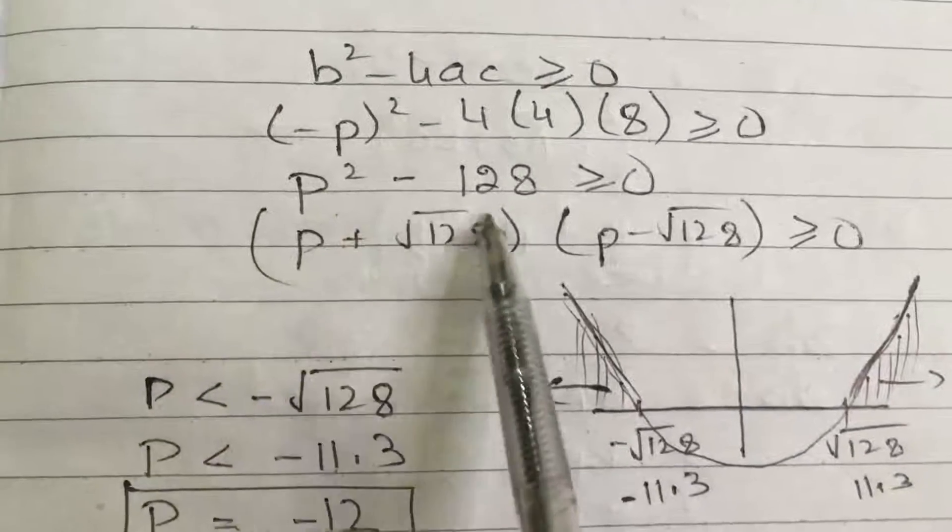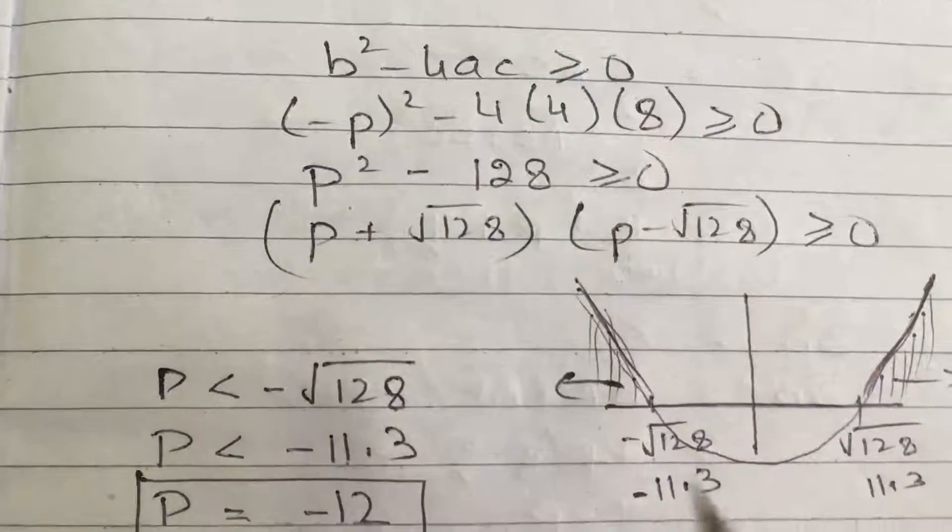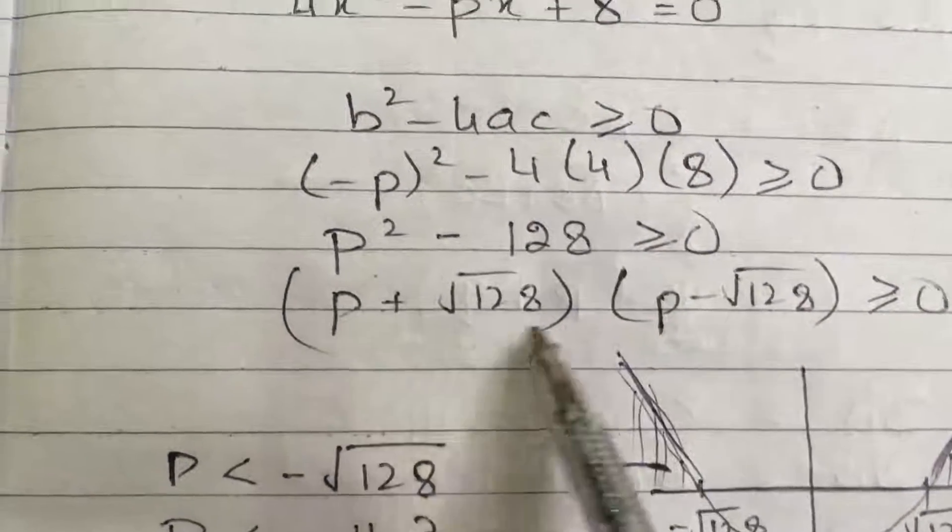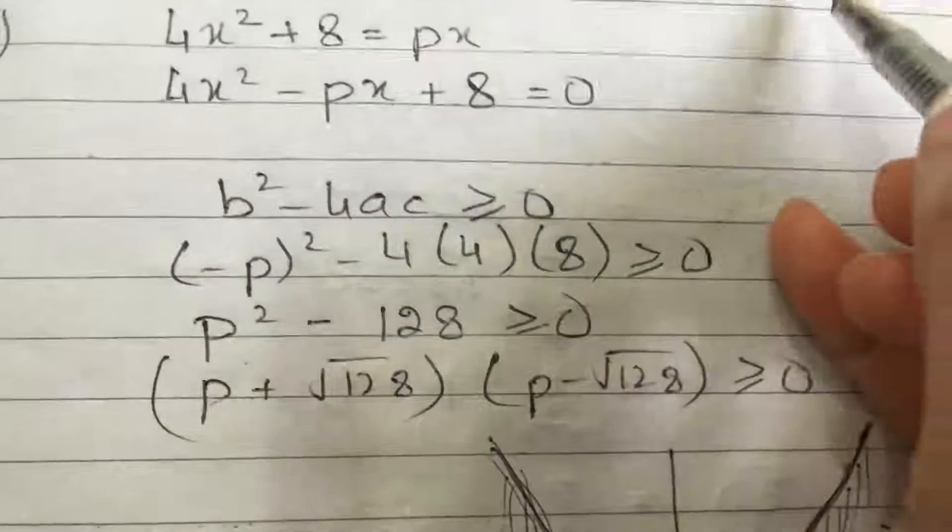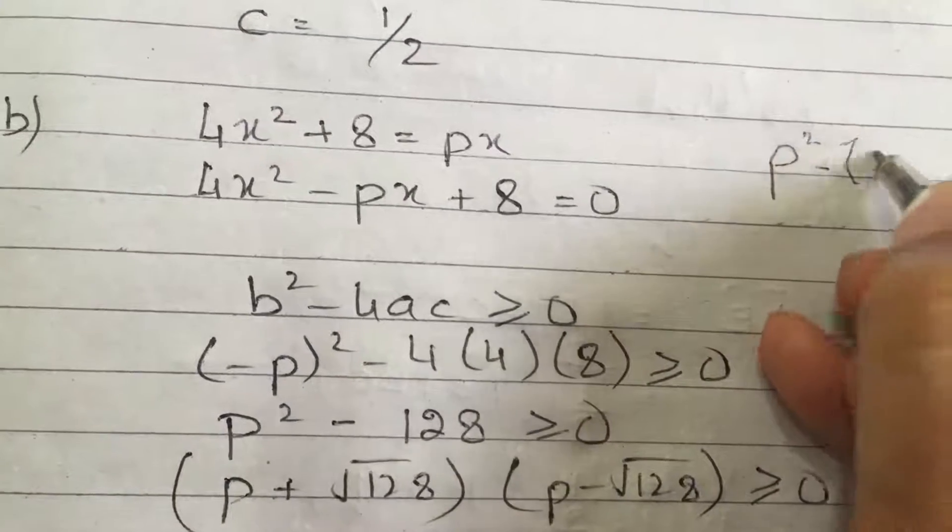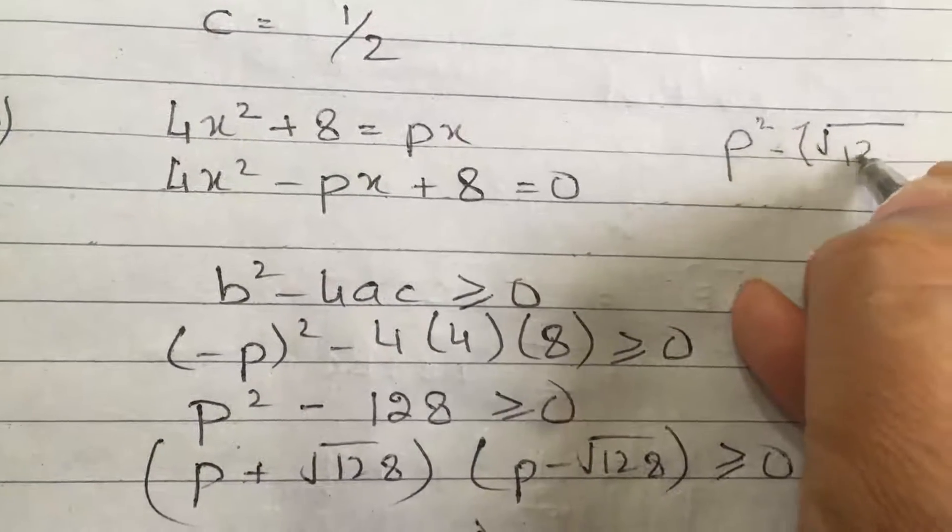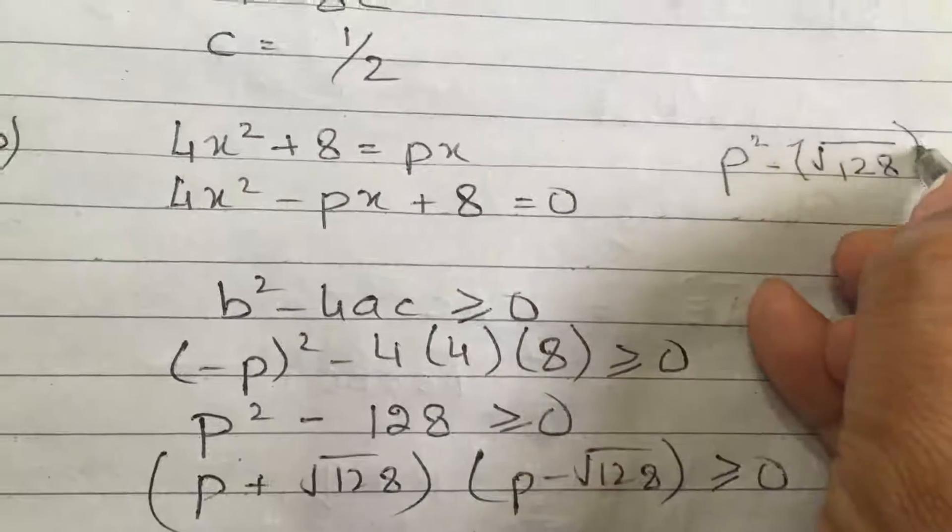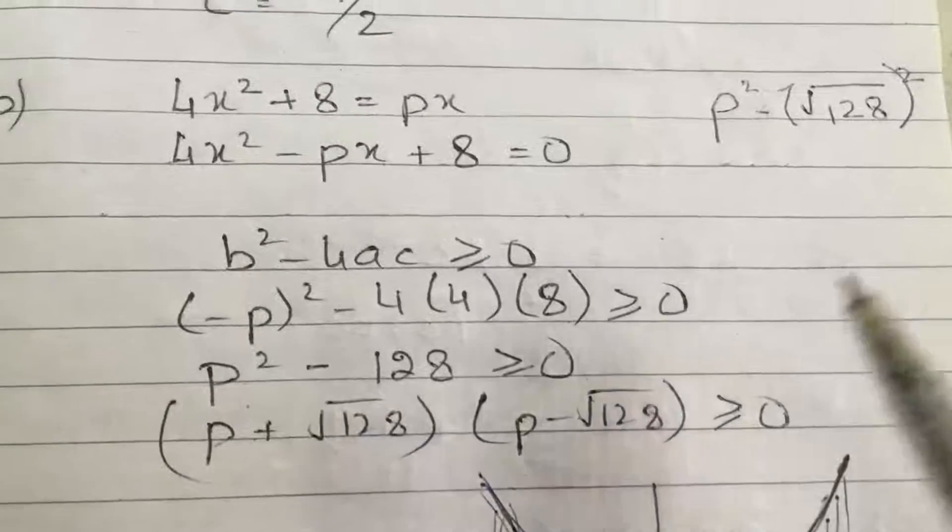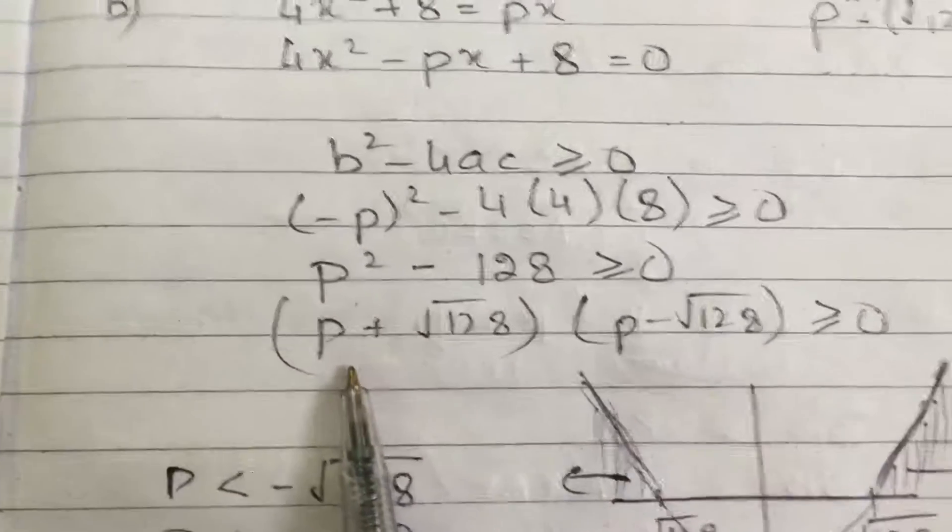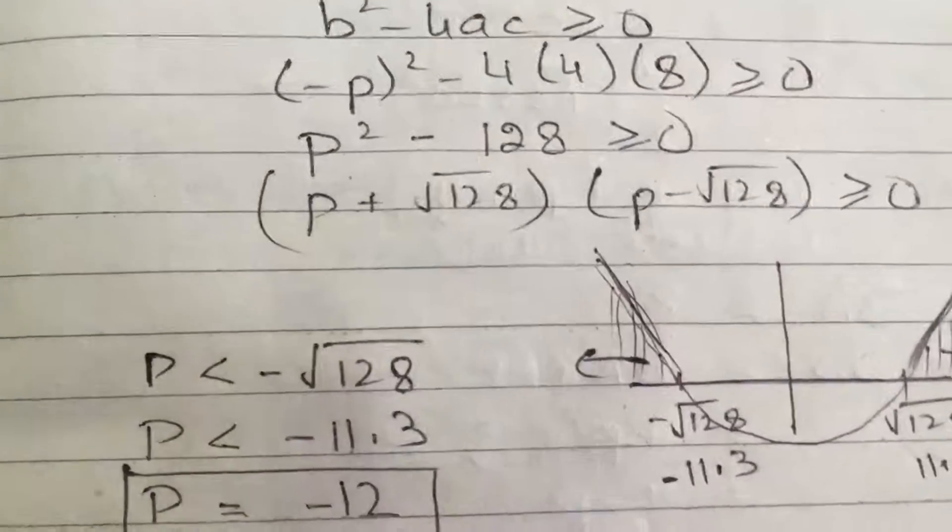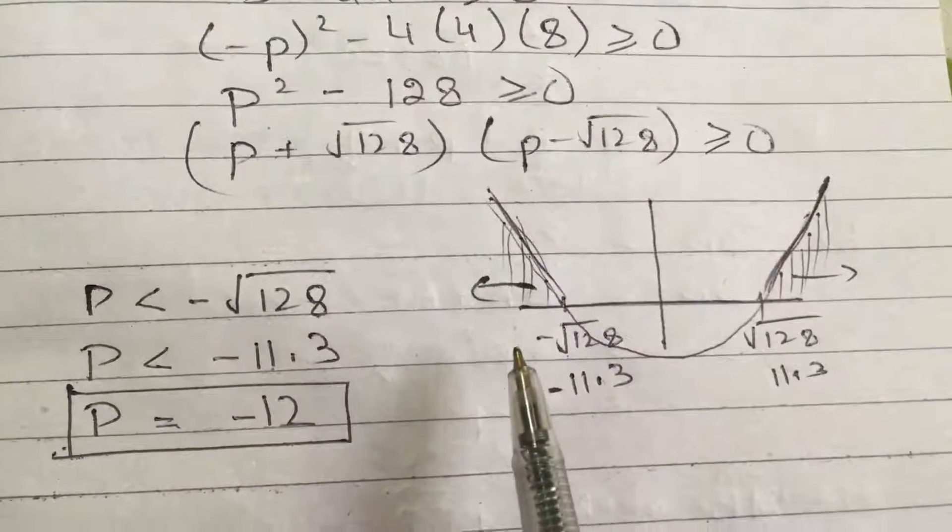So this thing is, oh sorry, p squared minus 128 is greater than or equal to 0. So now from here I know the x-intercept. If you don't know how this happened, I can show you one step here. And that is p squared minus root 128 squared. So this is how I have done it. So it is becoming a squared minus b squared. So I have applied the algebraic identity here.